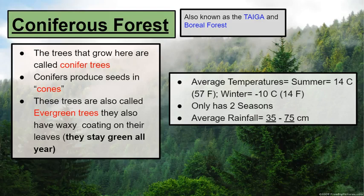The second biome that we will be going over is the coniferous forest. The coniferous forest will also be known as the taiga and the boreal forest. It is important to know all three names mean the exact same biome.